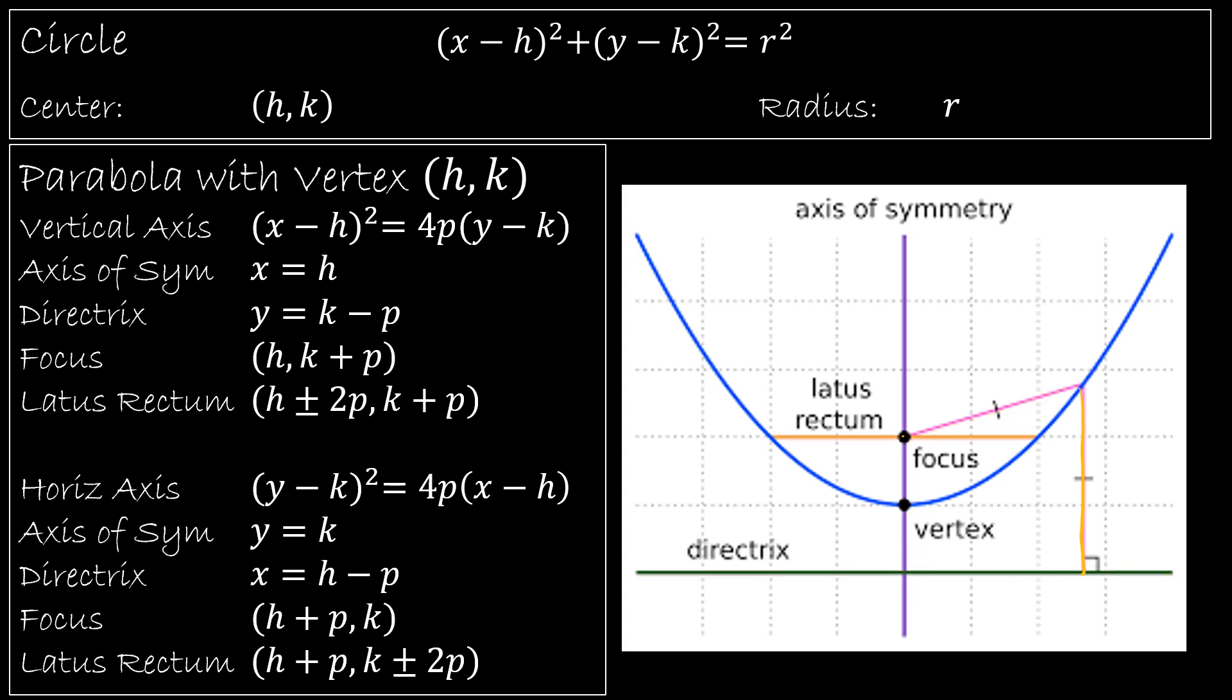So that's why they exist, is because every value is going to be the same distance. And then the latus rectum goes through the focus of our parabola, and it is perpendicular to our axis of symmetry. Again, each of those equations or measurements are here for you on this page for you to refer back to easily.